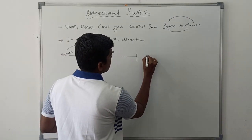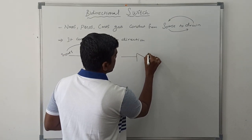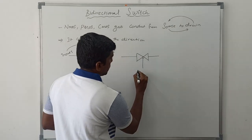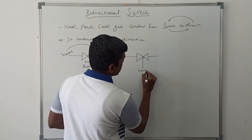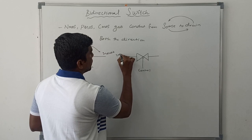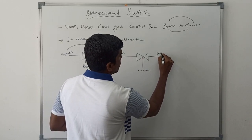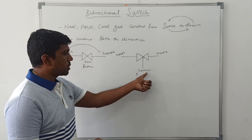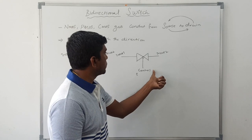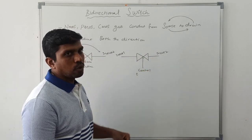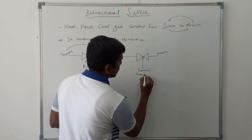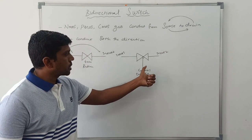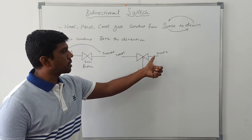The next symbol is the bi-directional switch with a control signal. Here the control signal is equal to zero. Whenever the control signal is equal to zero, the input data is connected to the output. The keyword for this is TRAN if 0.